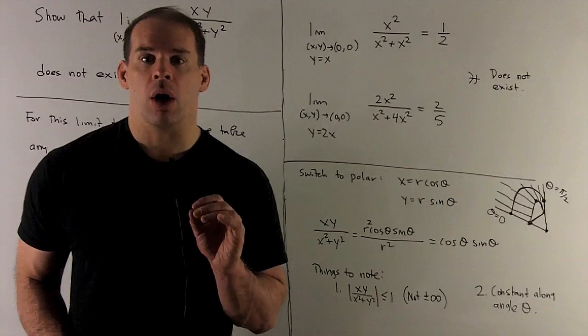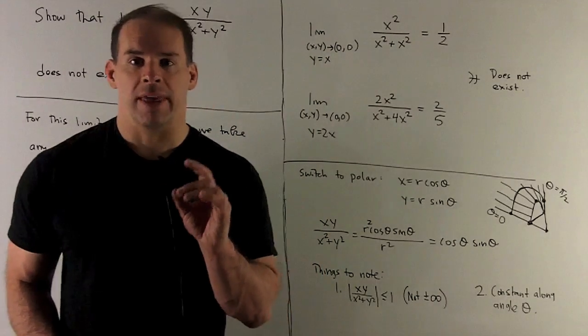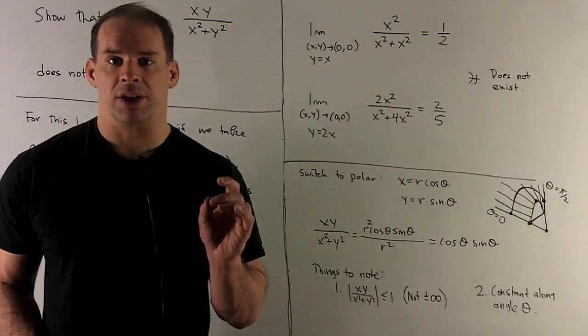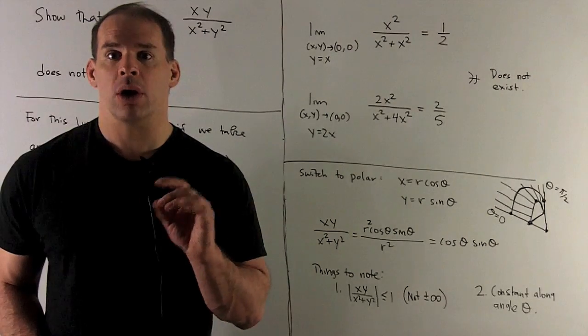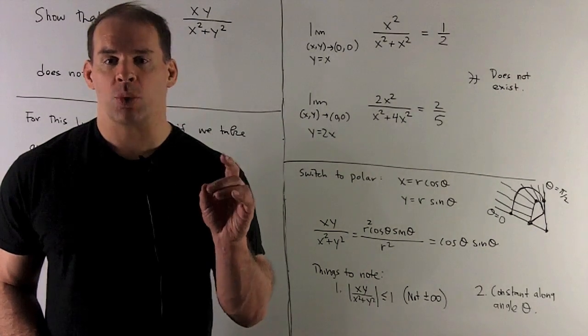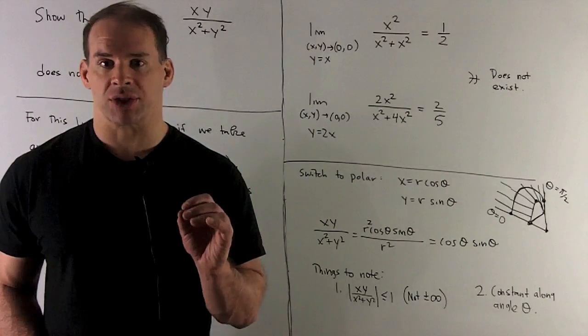So what happens if we go along y=x? Then I'm looking at the limit as (x,y) goes to (0,0) along y=x of x² over (x² + x²).